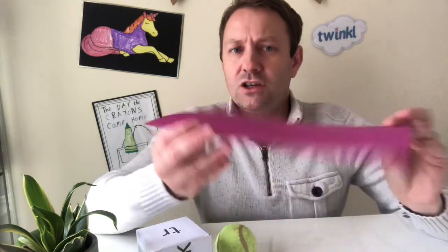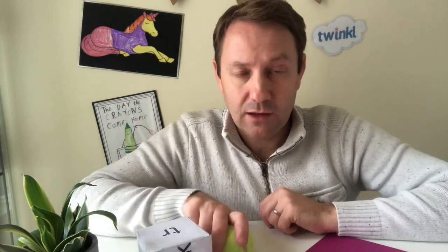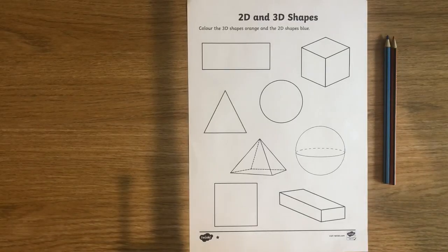Hi, I'm Ben from Twinkle, and today I'm looking at shapes, including 2D shapes or flat shapes like this rectangular piece of card, 3D shapes or solid shapes like this sphere or ball, or this cube. One way to practice shape knowledge is to use one of these coloring sheets.